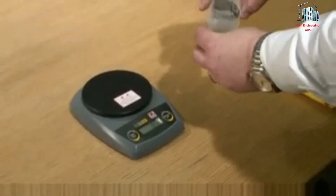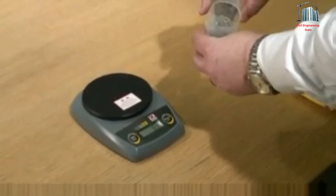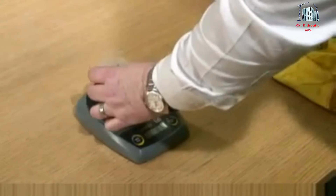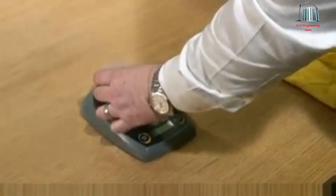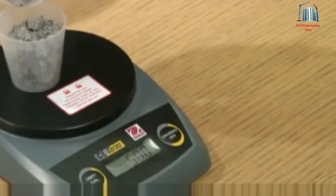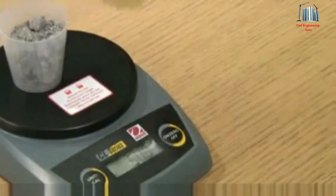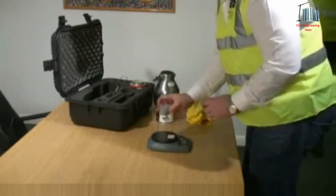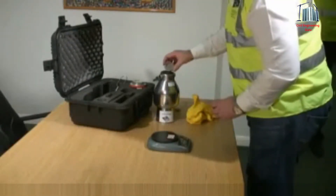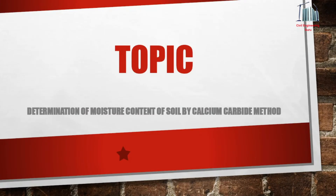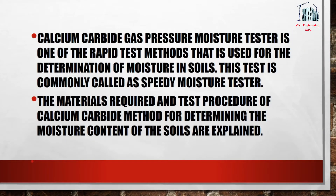Hey guys, welcome to our channel Civil Engineering Guru. Today we discuss a type of moisture content test — the determination of moisture content of soil by calcium carbide method.